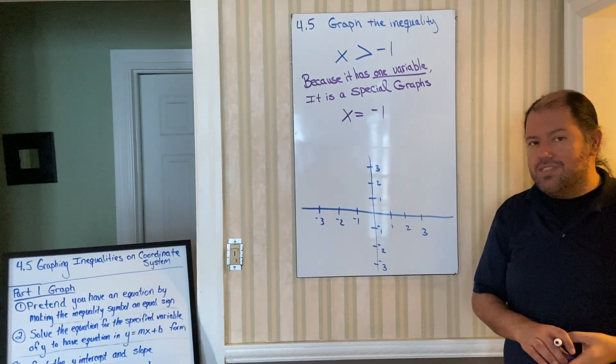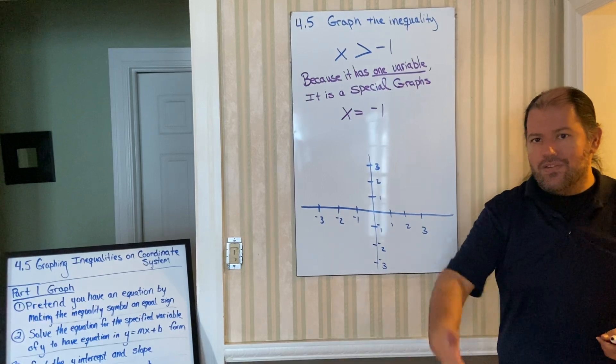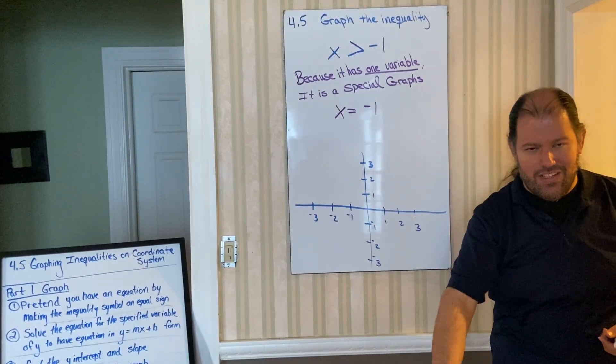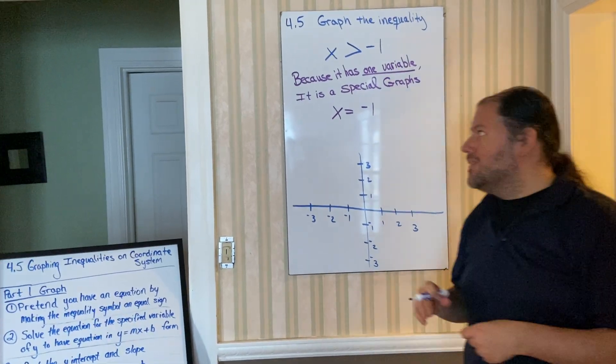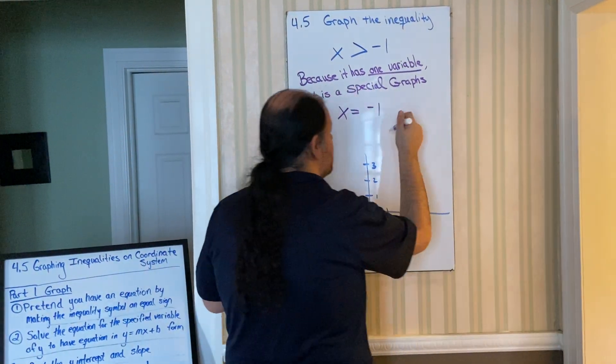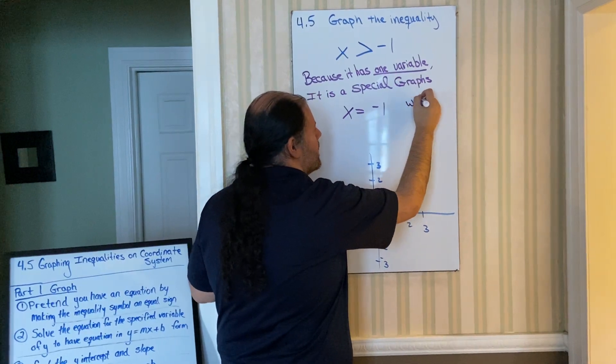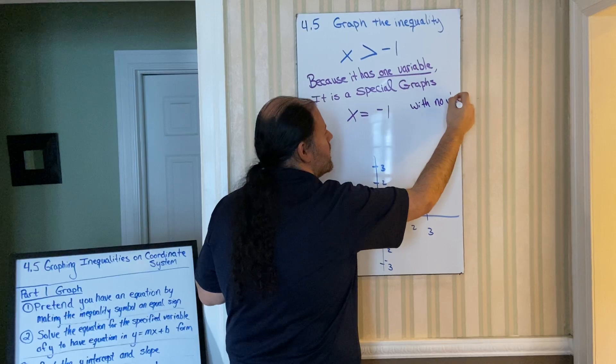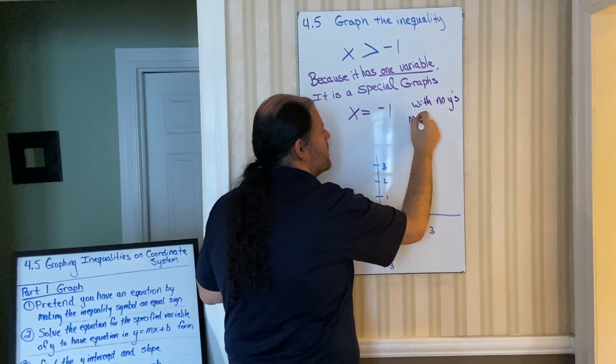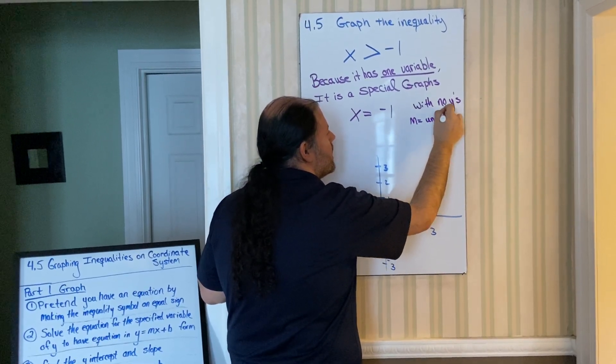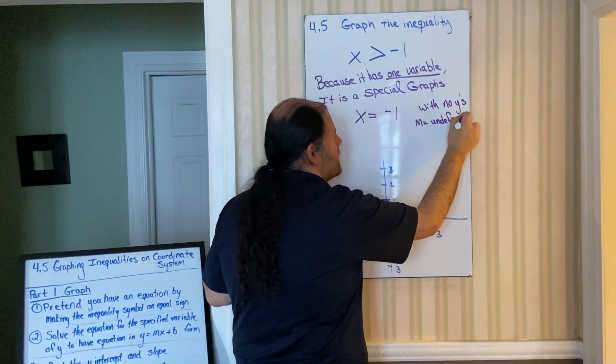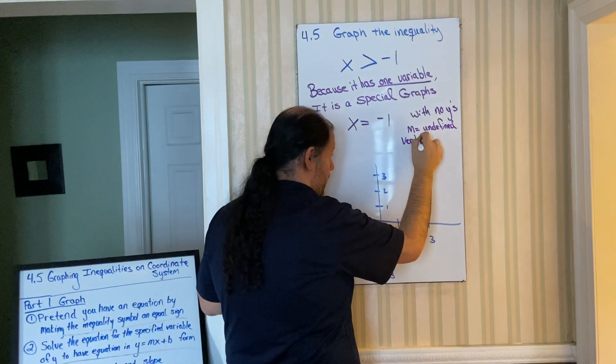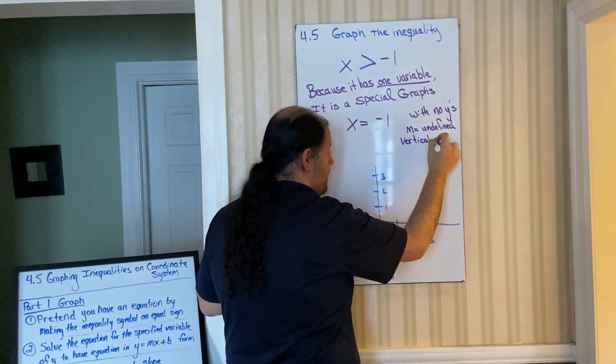And the guys that had slopes that were undefined, those are the ones that were perfectly up and down. They were vertical lines. So with no y term, we know that slope is undefined. And when slope is undefined, we know we're going to have a vertical graph.